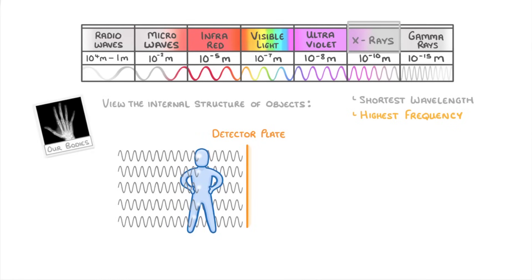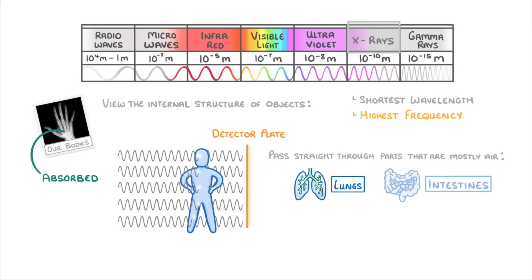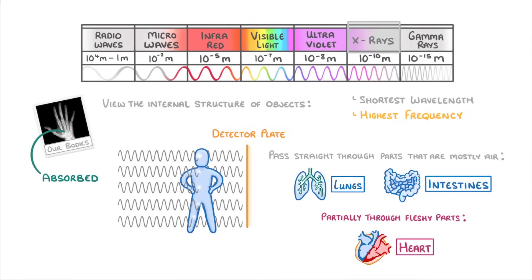This works because X-rays will be absorbed by dense materials like bones, but will be able to pass straight through the parts that are mostly air, like our lungs and intestines, and they'll only pass partially through the fleshy parts, like our heart.